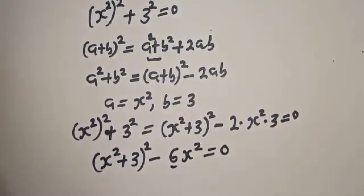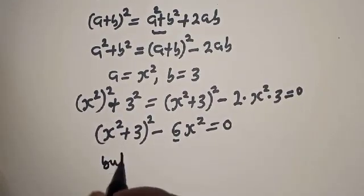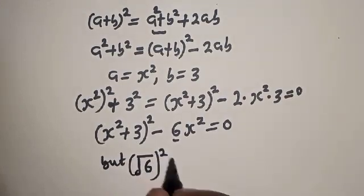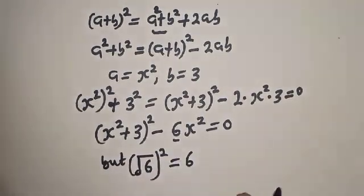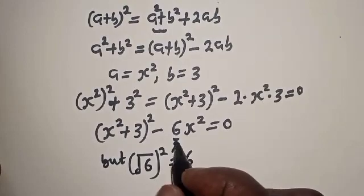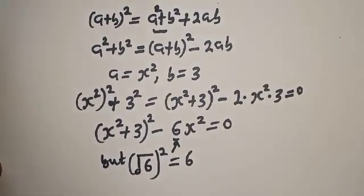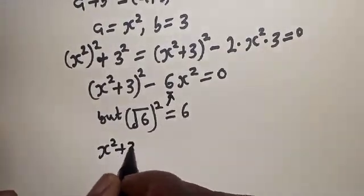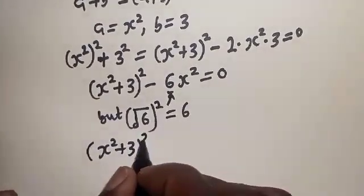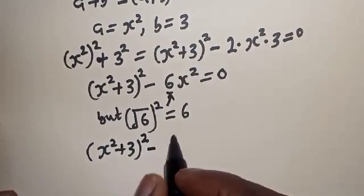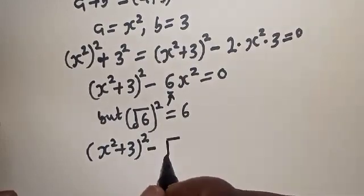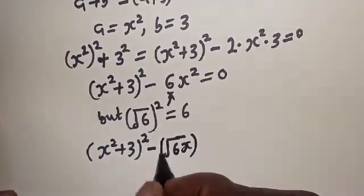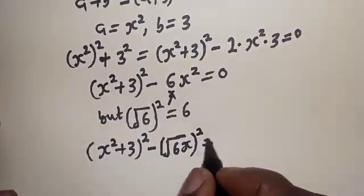Now let's transform this: 6 — note that root 6 squared equals 6. So let's substitute. We have x squared plus 3 squared minus root 6 times x squared equal to zero.